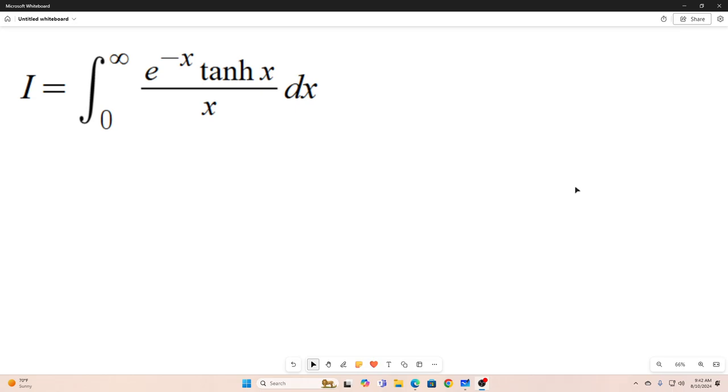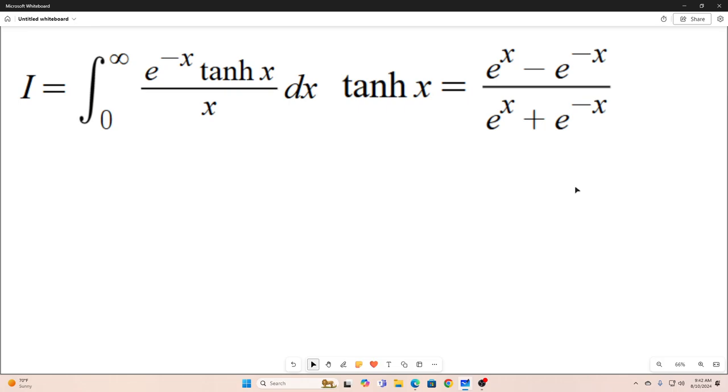All right, so the first thing we're going to do is we're going to use this, that the hyperbolic tangent function is equal to this. It's just e to the x minus e to the negative x all over e to the x plus e to the negative x. So we're just going to replace tangent hyperbolic with that. And so there we go. That's what we did.